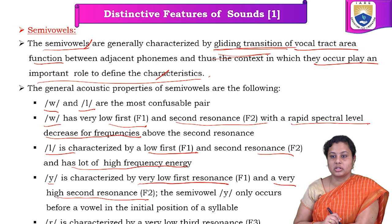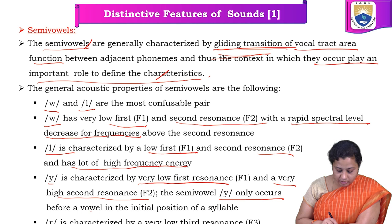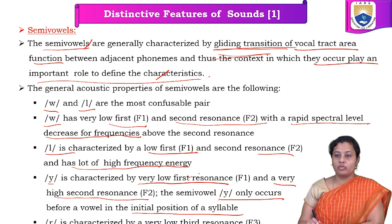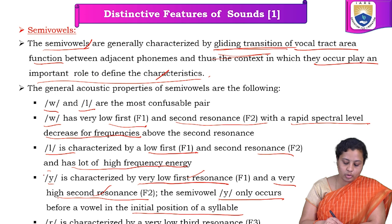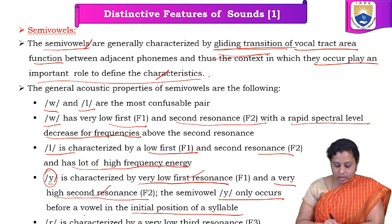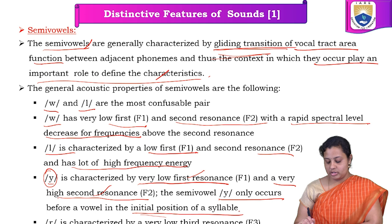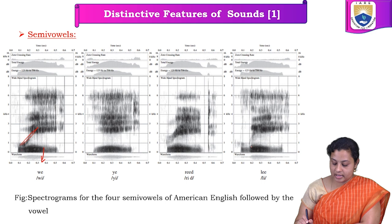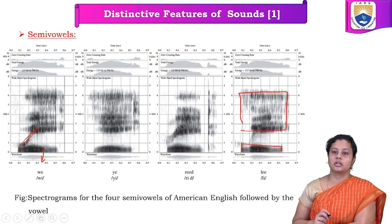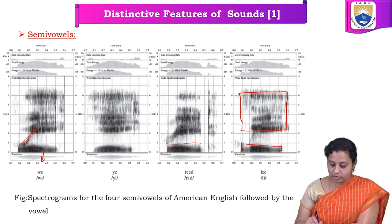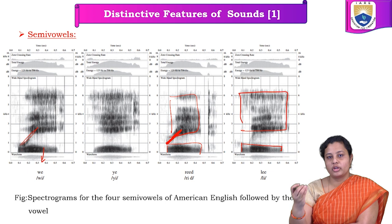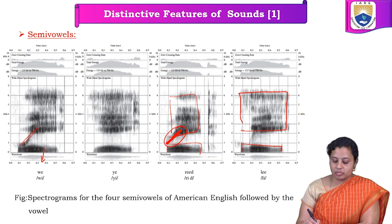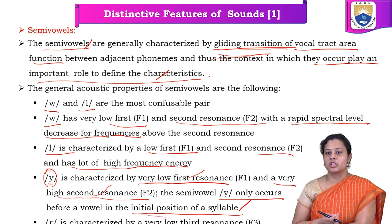'Y' occurs only before a vowel in the initial position of a syllable. Since 'y' has a low first formant frequency and high second formant frequency, it is mostly used before a vowel in the initial position of a syllable. For the 'r' sound, both the first and second formant frequencies are low, and the transition — the gliding — from one phoneme to the second phoneme occurs over a very narrow time period, so both formant frequencies are close to each other.